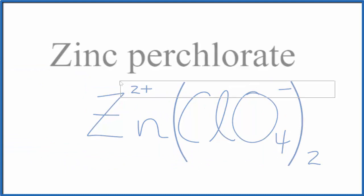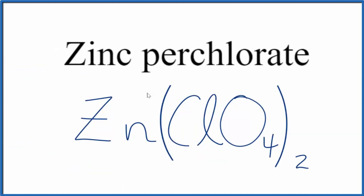Then get rid of these symbols, and this is the formula for zinc perchlorate: Zn(ClO4)2. This is Dr. B, and thanks for watching.